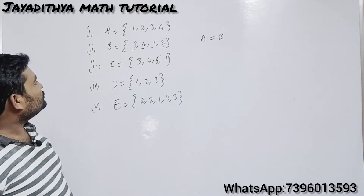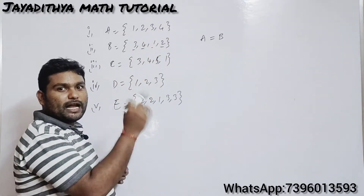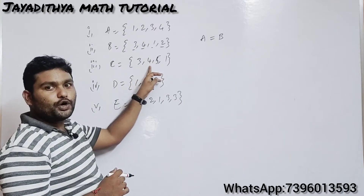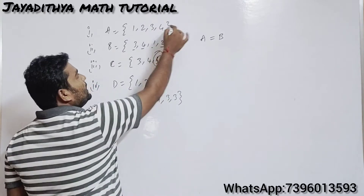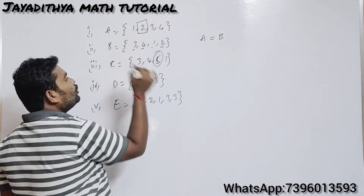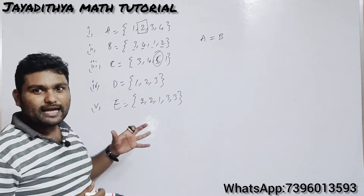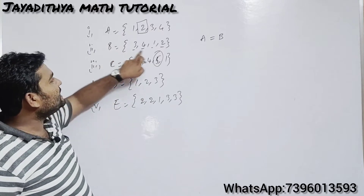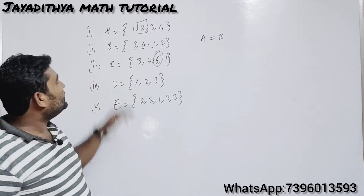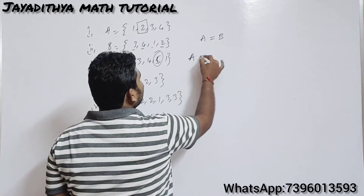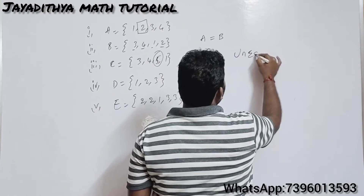Now compare A and C. Set A has {1, 2, 3, 4} but set C has {3, 4, 5, 1} — set C has an extra element 5 which is not in set A, and set A has element 2 which is not in set C. Since not all elements are equal, A ≠ C. Sets which do not have the same elements are called unequal sets.